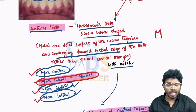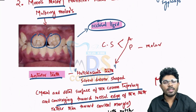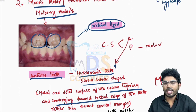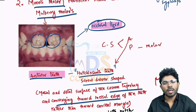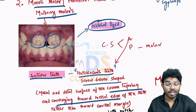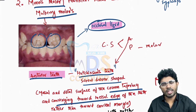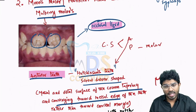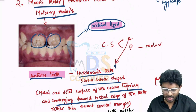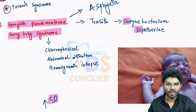I want you to add a note about Hutchinson triad. Hutchinson triad is most commonly seen in congenital syphilis. Please mention in the comment box what is Hutchinson triad and also what is Hutchinson pupil, where you see it, and what it is. Hutchinson teeth and Hutchinson triad are seen in the case of congenital syphilis.